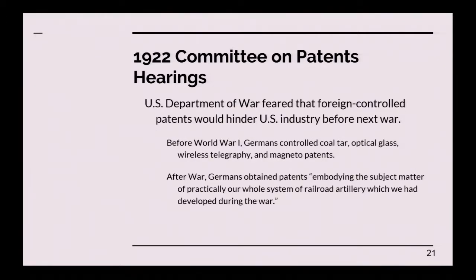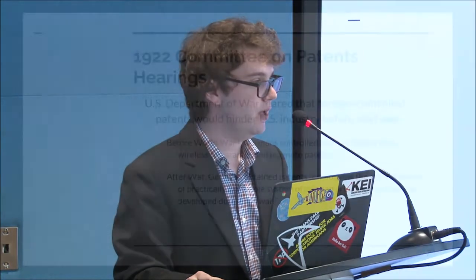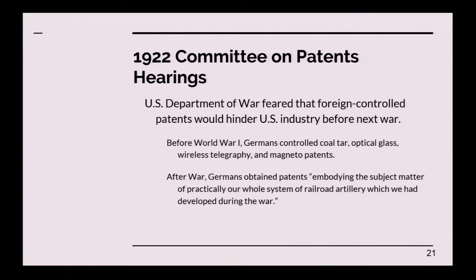The Department of War proposed this bill because it feared that foreign-controlled patents would hinder U.S. industry leading into the next war — this was just after World War I. A representative of the Judge Advocate General testified that the Germans controlled patents on coal tar, used in dye and medicines manufacturing, optical glass, wireless telegraphy, and magnetos. After the war, German patent holders were allowed to file for patents in the United States again under the Logan Act, and some German inventors came in and patented the entire system of U.S. railroad artillery. So the Army was very worried that in the next war, which they were anticipating even in 1922, that foreign control of patents could be detrimental to U.S. industry.